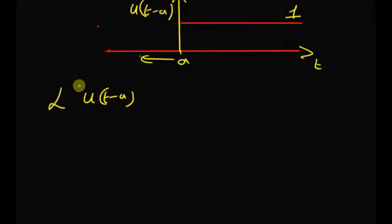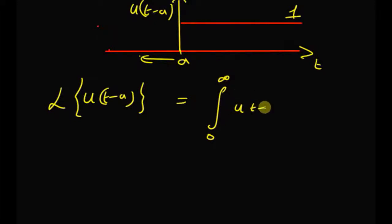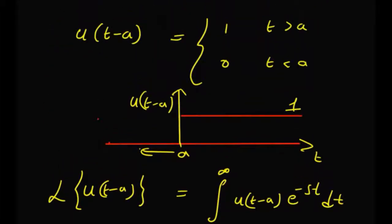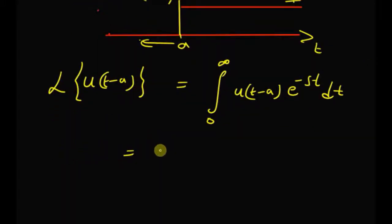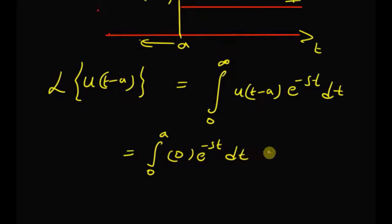first let us use the original definition of the Laplace transform, that is the integral from 0 to infinity of u of t minus a times e to the power minus st dt. By using the definition of the function, we can rewrite the integral as: integral from 0 to a of 0 times e to the power minus st dt, plus integral from a to infinity of 1 times e to the power minus st dt.